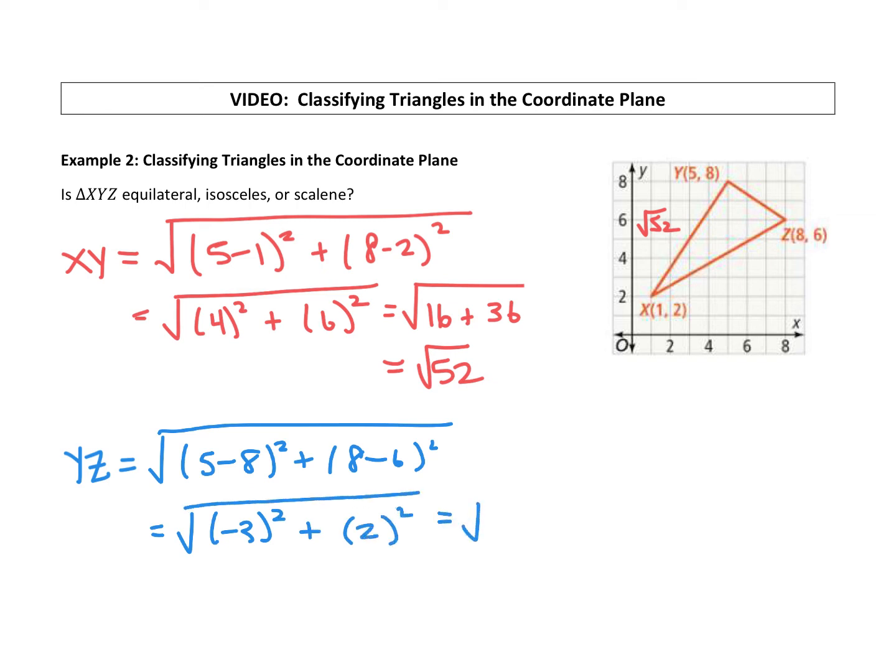All right, negative 3 squared. Anytime you square a negative number in parentheses like that, it does turn positive. So 9 plus 2 squared is 4. And we're getting the square root of 13. So YZ has a length of square root of 13.